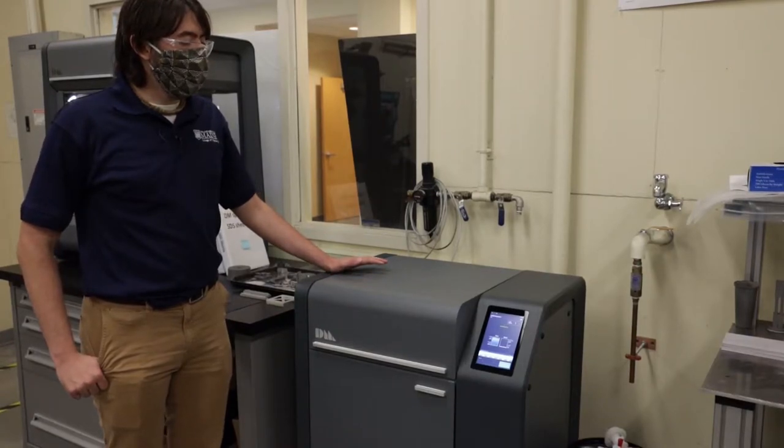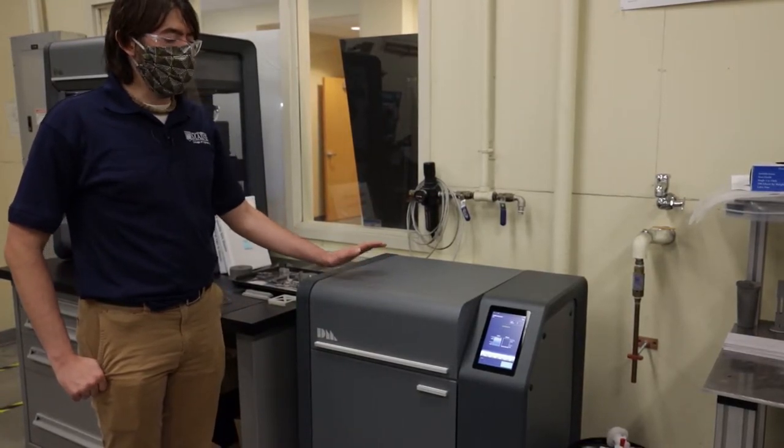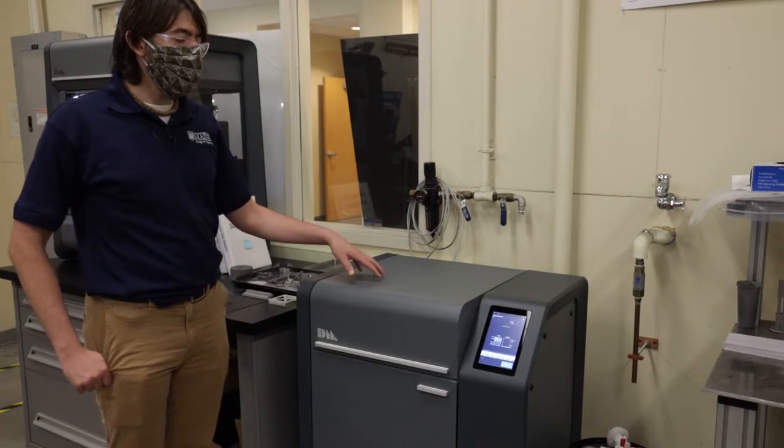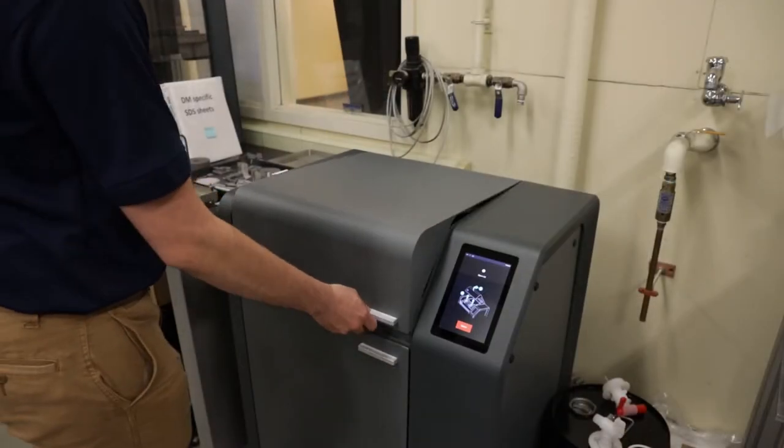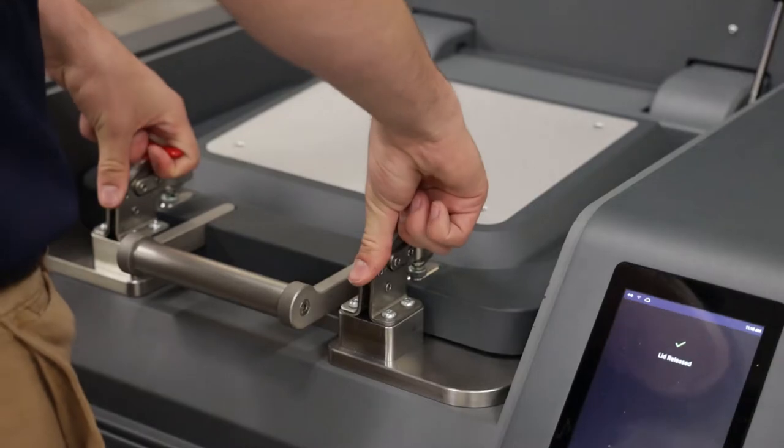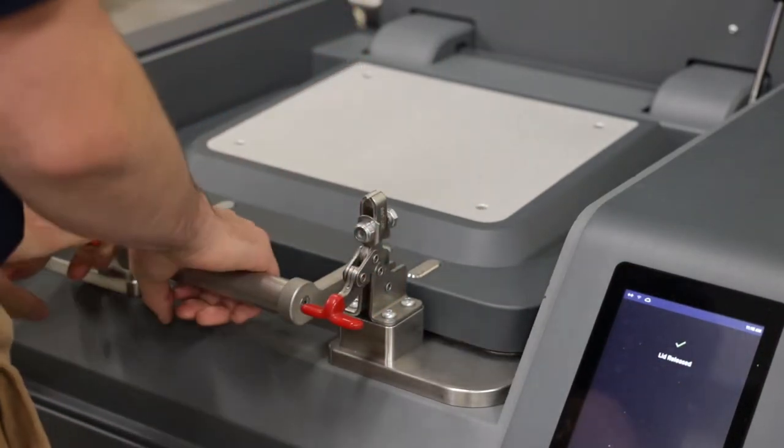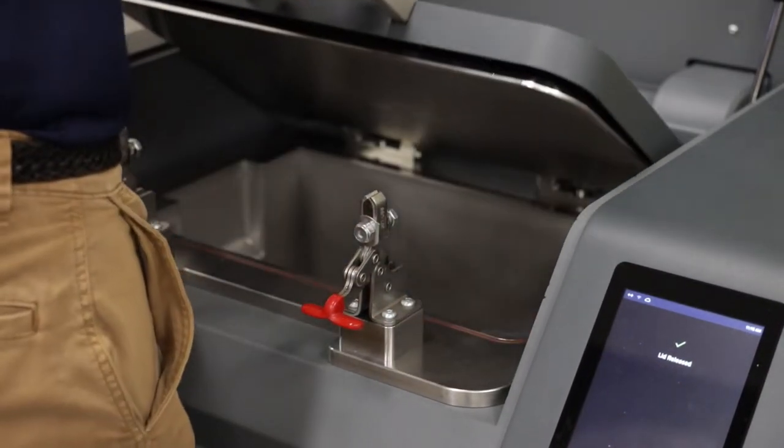The second machine in the Desktop Metal Studio System is the D-Binder. The D-Binder is used to remove most of the binder material from the part and then prepare it for the third stage, which is sintering.